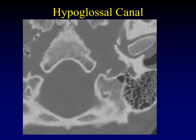The hypoglossal canal is another important reference point. It runs at about 45 degrees, just lateral to the clivus, and it carries the hypoglossal nerve as well as a small remnant of the fetal hypoglossal artery.